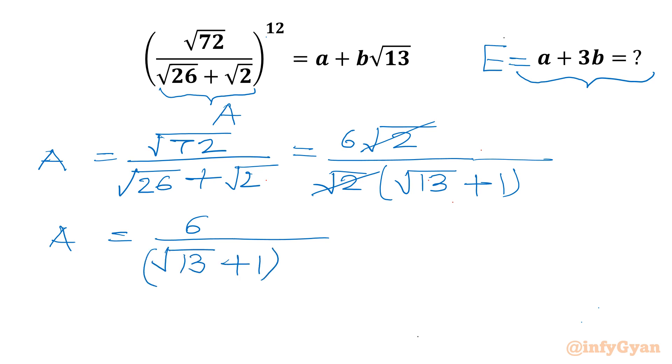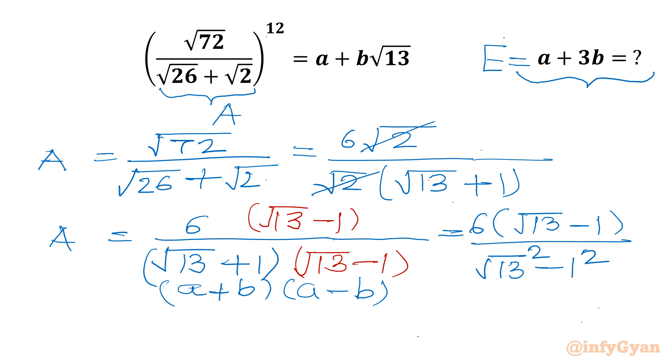Now I will rationalize our denominator. I need to multiply numerator and denominator by root 13 minus 1. Now I can consider in denominator the difference of 2 square identity as it is a plus b times a minus b available. So I can write 6 times root 13 minus 1 over root 13 square minus 1 square. Further I can write 6 times root 13 minus 1 divided by 12. It is 13 minus 1. So ultimate value is root 13 minus 1 over 2.